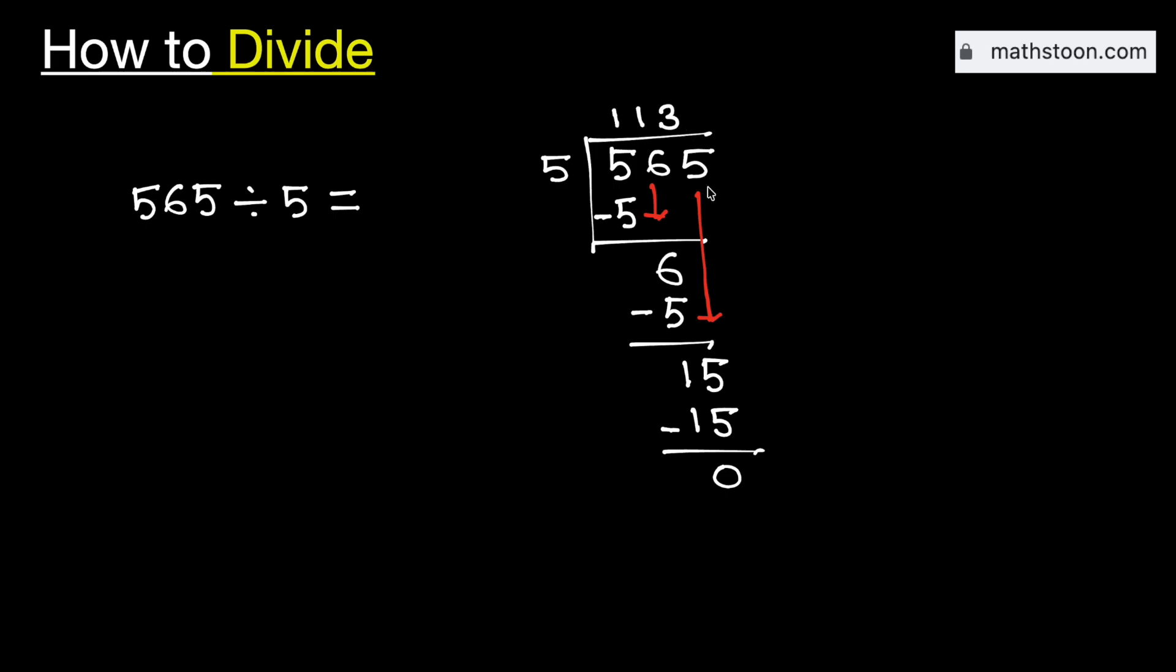As we have no number to bring down here and we have got the number 0, so we will stop. Therefore, 565 divided by 5 is equal to 113. And this is our final answer.